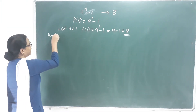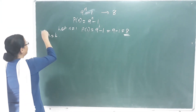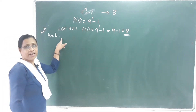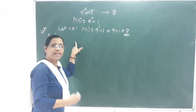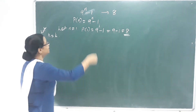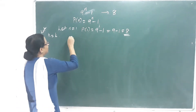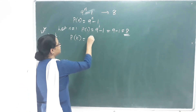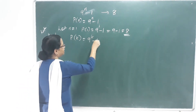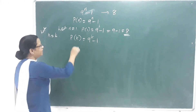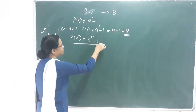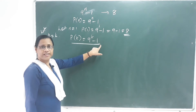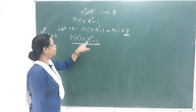Let N equal to K. Let us assume that N equal to K. We will prove it. P of K equals 9 raised to K minus 1. I will underline it — this is the main step. We assume that this step is P of K.